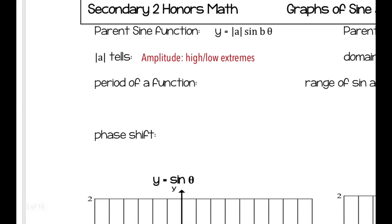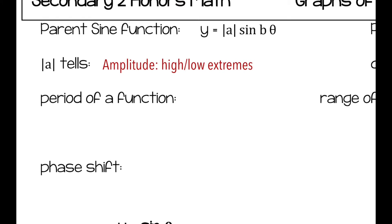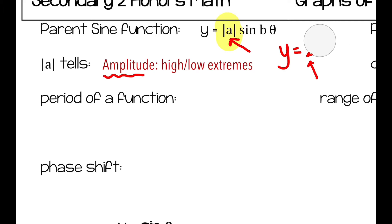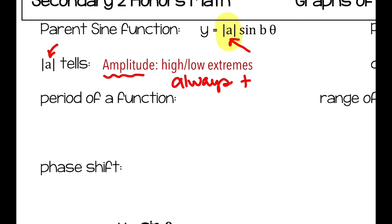The definition for amplitude: the absolute value of a tells us what's called the amplitude. We've seen a number in front of other functions before — like y equals 2x squared means there's a stretch. Same idea here. The amplitude is always the absolute value of a, so when I ask for the amplitude, it's always positive. You're going to always give a positive answer for that.